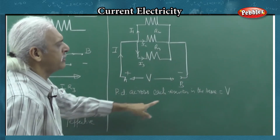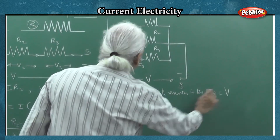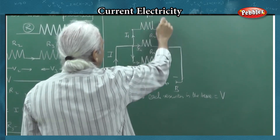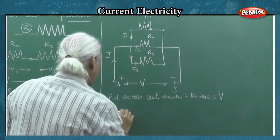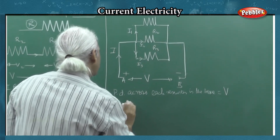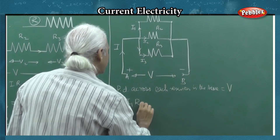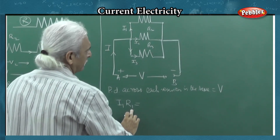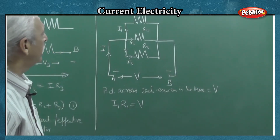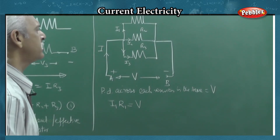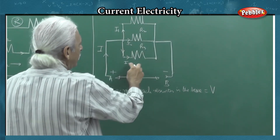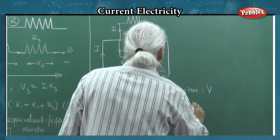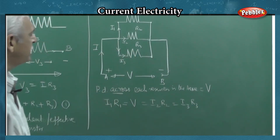In series, current is the same in all resistors. In parallel, potential difference is the same across each resistor — equal to V. As per Ohm's law applied to R1, R2, and R3: I1 times R1 equals V, I2 times R2 equals V, I3 times R3 equals V. The potential drop across each resistor is the same.